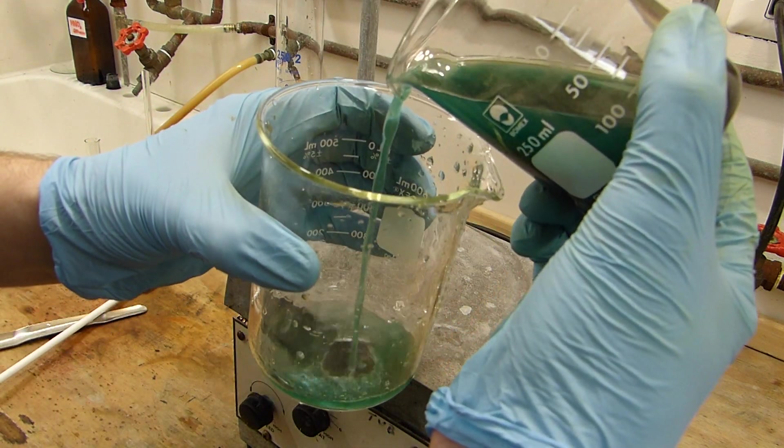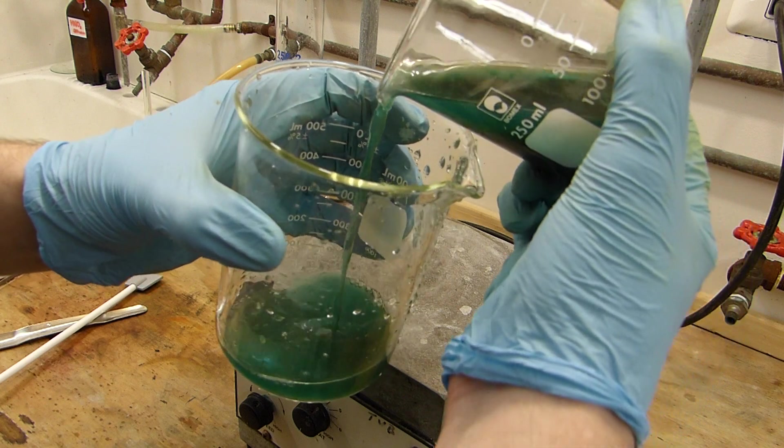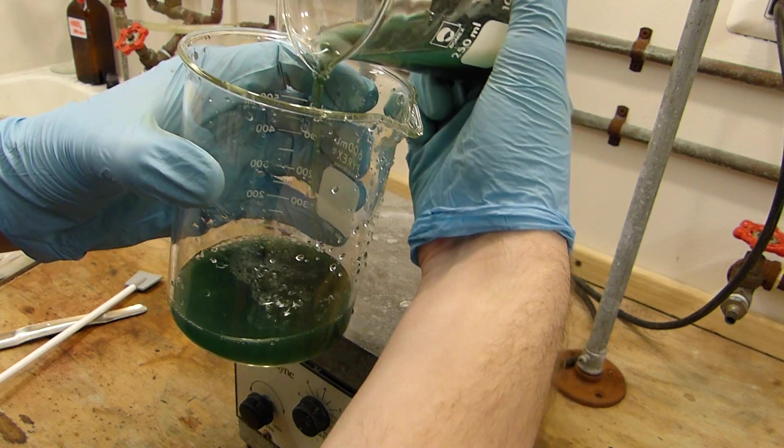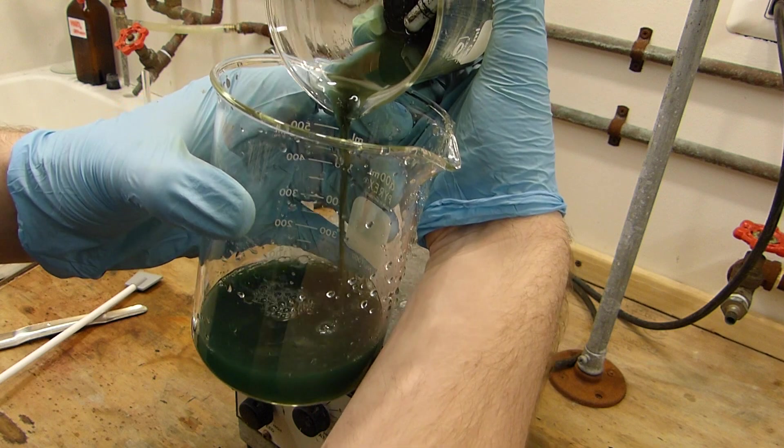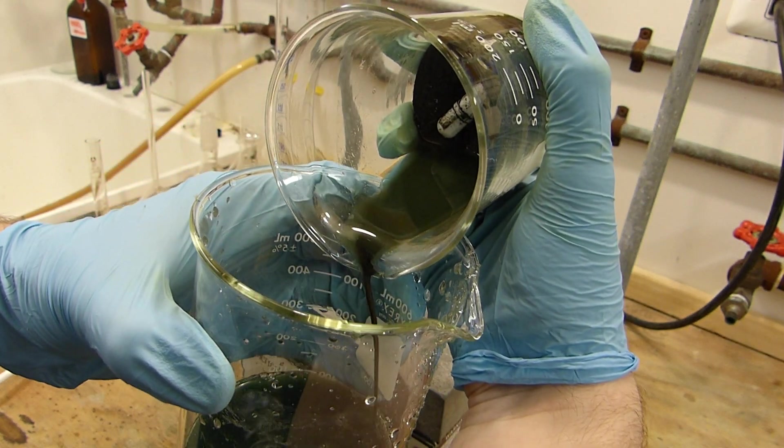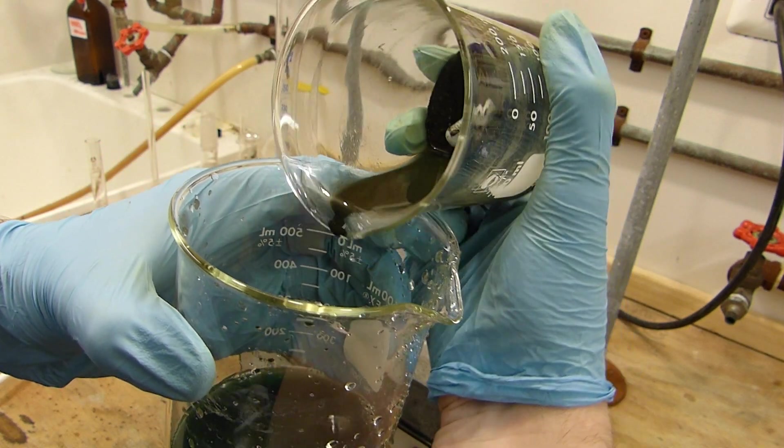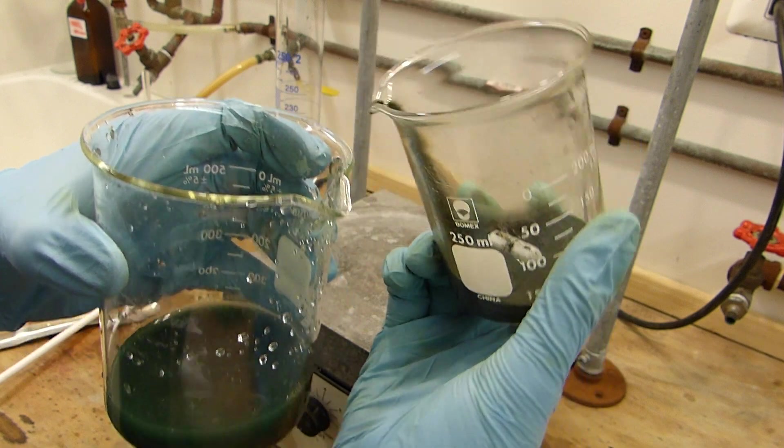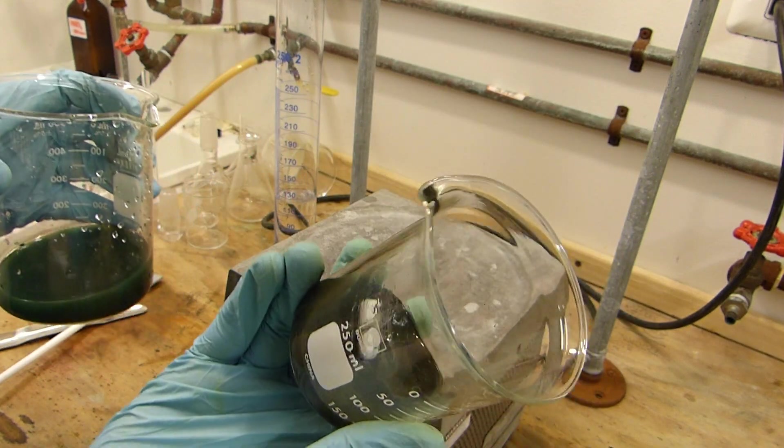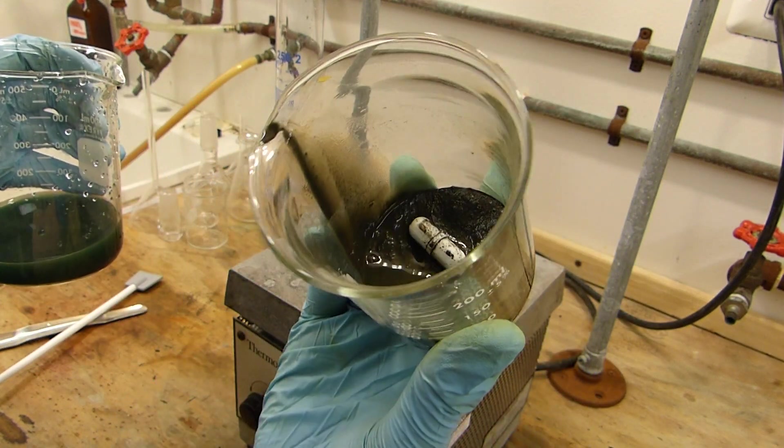You can see that as we pour this off. Trying not to get any of the precipitate in there. Pour this awkwardly so you can see it. That's about good enough. I don't want to get too much of the catalyst in there. There we go.